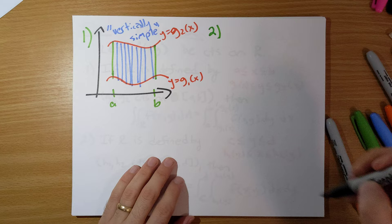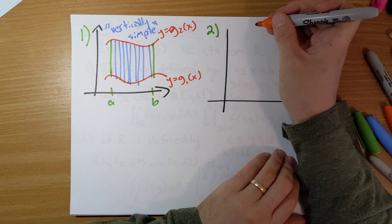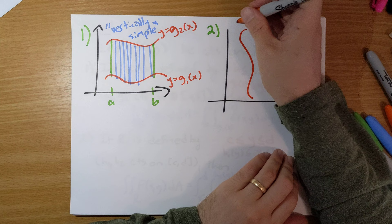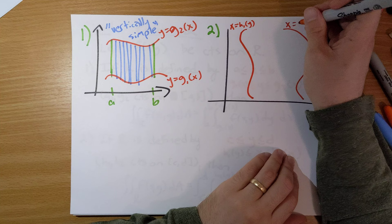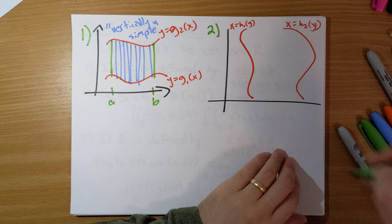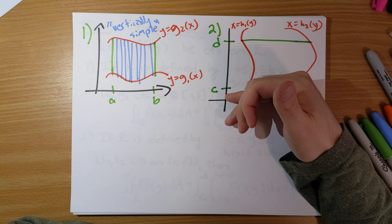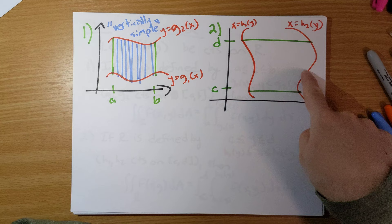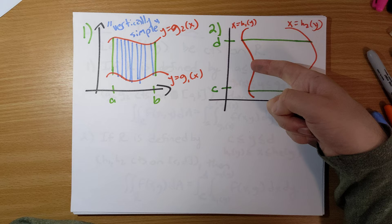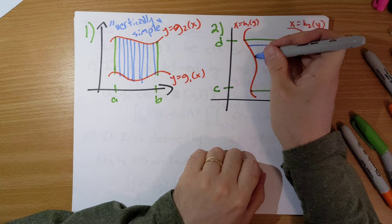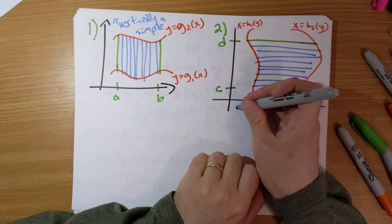The second case is when x is a function of y on each boundary. Here y runs from a fixed value c to a fixed value d, and for any particular value of y the x values run from x = h₁(y) to x = h₂(y). We slice it horizontally, and we call this a horizontally simple region.